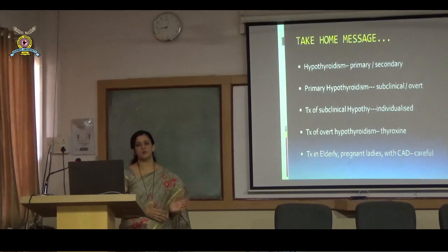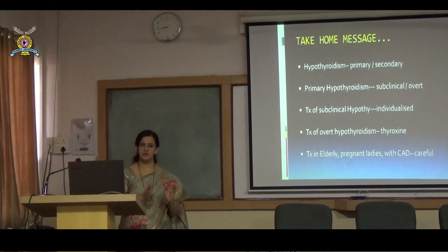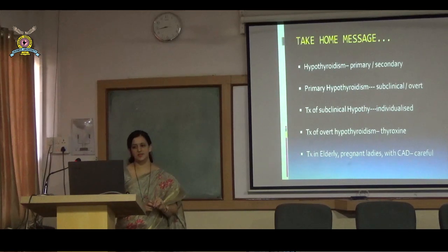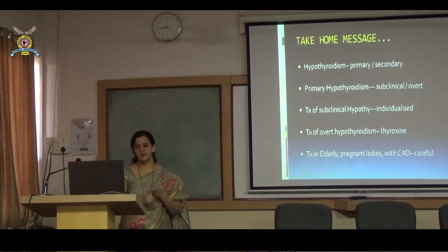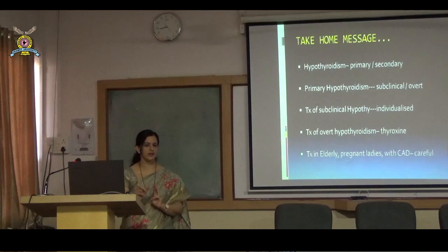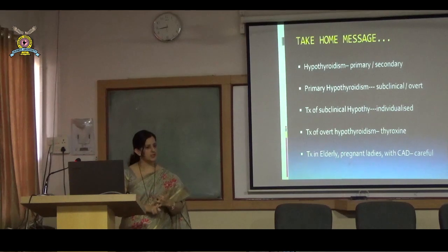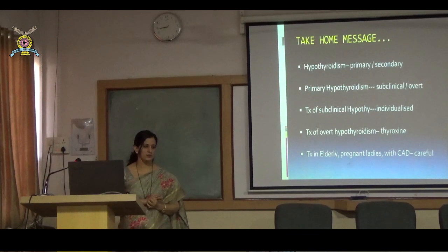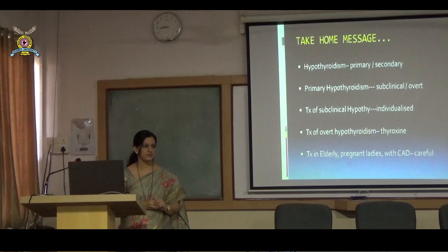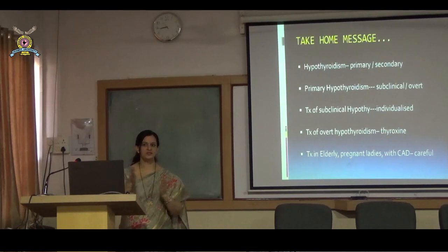In summary: hypothyroidism can be primary or secondary; primary can be subclinical or overt. Subclinical requires individualized low-dose treatment. Overt hypothyroidism uses thyroxine. Special care is needed in elderly (low start dose, gradual increase), coronary artery disease (very low start, gradual), and pregnancy (aggressive treatment, lower TSH targets, monthly monitoring). Pregnant patients with hypothyroidism are ideally managed under an endocrinologist for precise targeting and fetal monitoring.